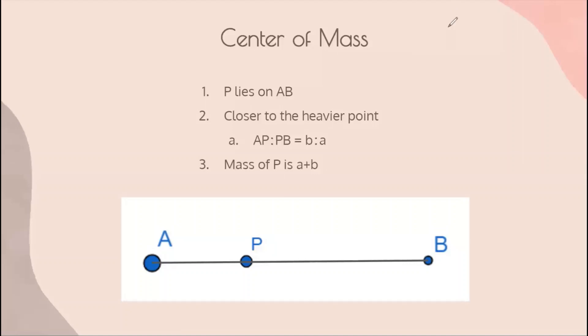In this example, the mass of B is 1 and the mass of A is 2, so the ratio is 1 to 2, which is the same as the 1 to 2 ratio of AP to PB. It's easy to get confused by the order here. If you do, just remember that P is always going to be closer to the heavier point. Another thing to notice is that if we think of P as its own point, which is the sum of A and B, then the mass of P is going to be the mass of A plus the mass of B.